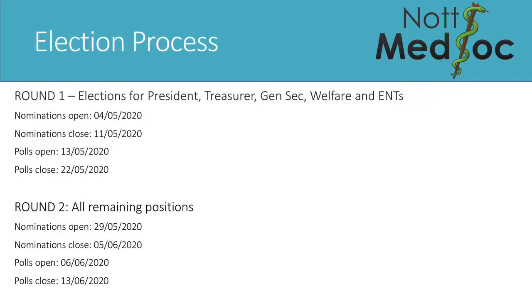After that, on the 29th of May, after we have the results from round one, we will open round two for every other committee position available. Nominations open on the 29th of May and close on the 5th of June, with voting opening on the 6th of June and closing on the 13th of June. This two-stage process allows people unsuccessful in round one to apply for other positions and have more of a chance to get onto MedSoc committee.